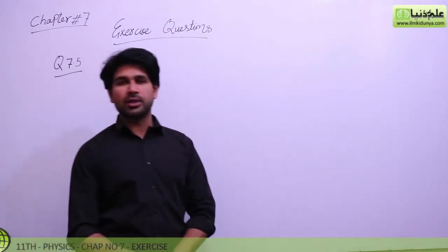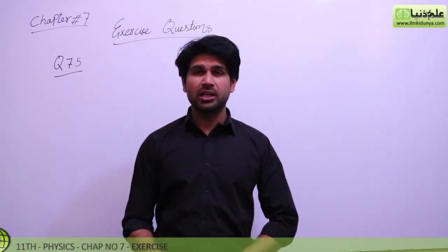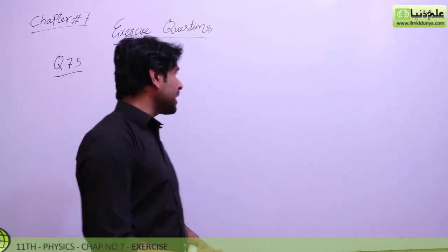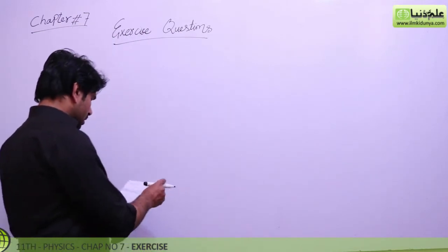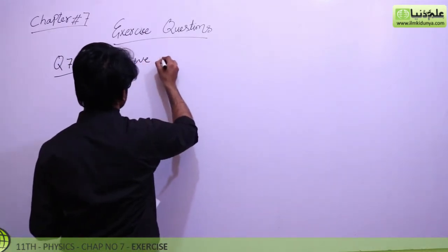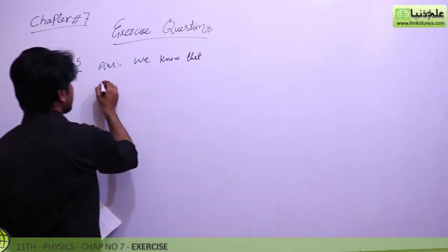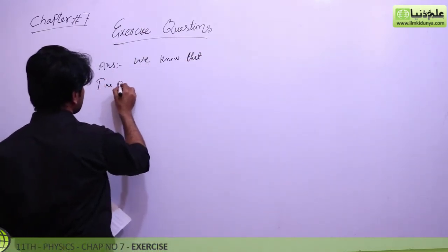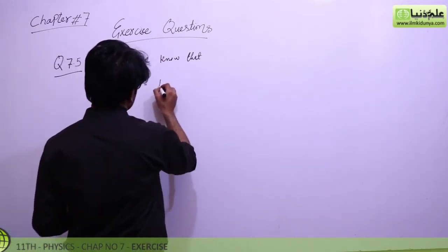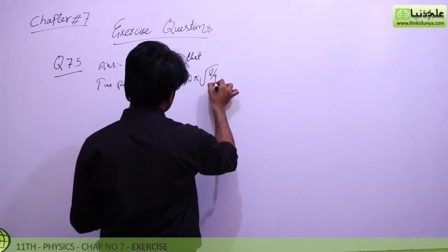This question asks: if the length is doubled, what is the time period? If the mass is doubled, what is the time period? We know that the formula of time period is T = 2π√(l/g).